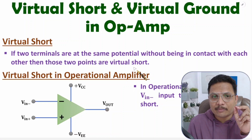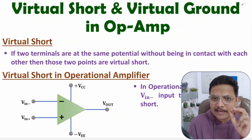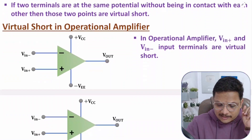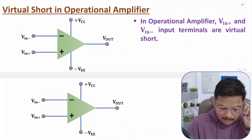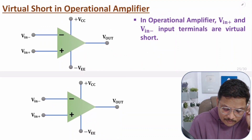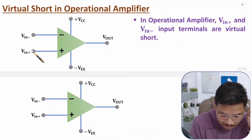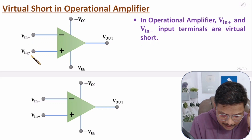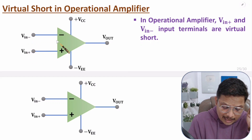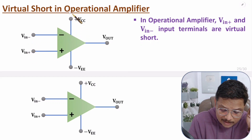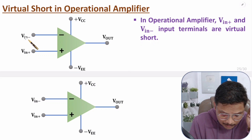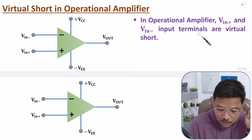With operational amplifiers, let me explain how this virtual short concept applies. With an op-amp, we have two input terminals: V in minus and V in plus. As per ideal operational amplifier characteristics, you can say V in plus and V in minus are virtually short.